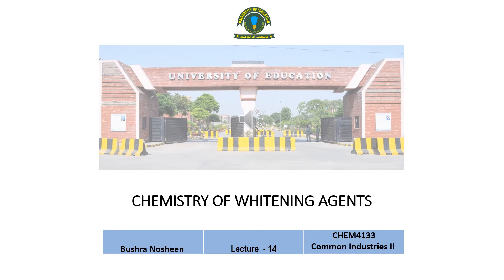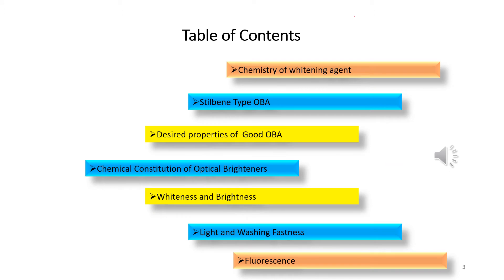Welcome to Lecture 14 on the chemistry of whitening agents. The table of contents covers: chemistry of whitening agents, stilbene-type OBAs, desired properties of good OBAs, chemical constitution of optical brighteners, whiteness and brightness, light and washing fastness, and fluorescence.